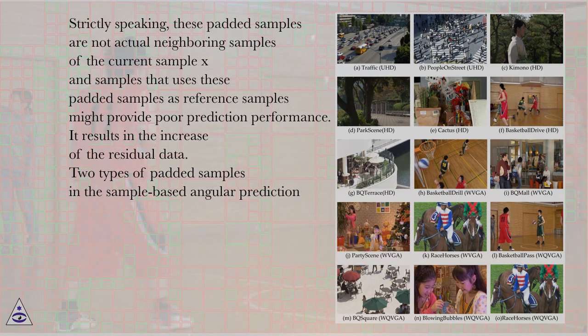Strictly speaking, these padded samples are not actual neighboring samples of the current sample, and samples that use these padded samples as reference samples might provide poor prediction performance. It results in the increase of the residual data. Two types of padded samples in the sample-based angular prediction.